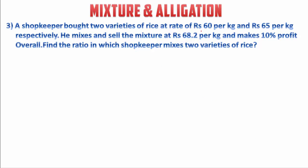Now the third question. A shopkeeper bought 2 varieties of rice at Rs 60 per kg and Rs 65 per kg respectively. He mixes and sells the mixture at Rs 68.2 per kg and makes 10% profit overall. Find the ratio in which the shopkeeper mixes the 2 varieties. There are 2 methods; I will show both. The first method uses cost price.